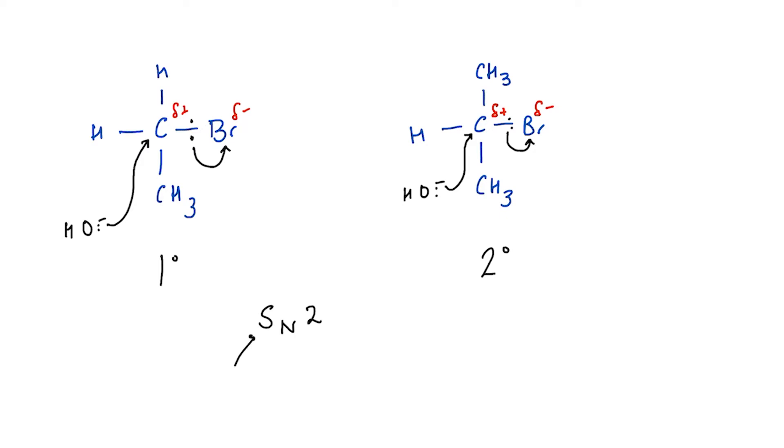S stands for substitution, N for nucleophilic, and the 2 for bimolecular. Because the nucleophile attacking and the bromine leaving happen at the same time, the rate of the reaction depends on both the concentration of the nucleophile and the concentration of the haloalkane. So, how are we going to explain difference in reactivity between the two types?